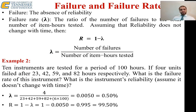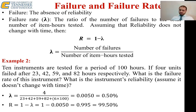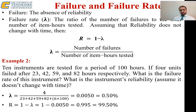Failure is the absence of reliability. The failure rate λ is the ratio of the number of failures to the total number of item-hours tested. Assuming reliability does not change with time, then R = 1 − λ. This is important: only if reliability doesn't change with time is R equal to 1 − λ. λ equals the number of failures divided by the number of item-hours tested.